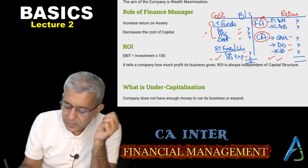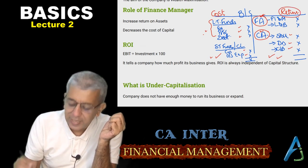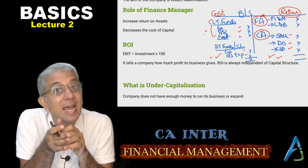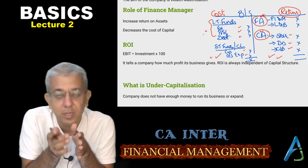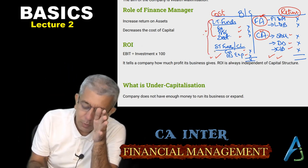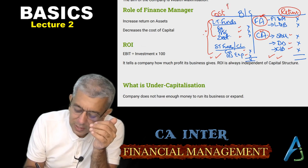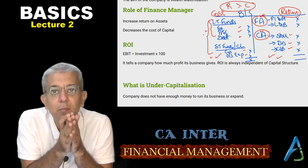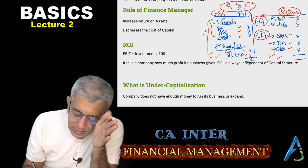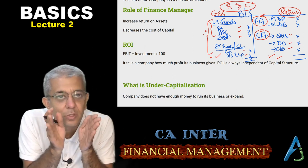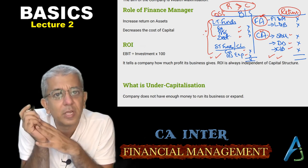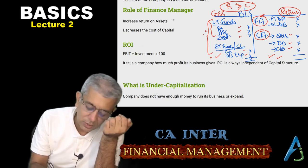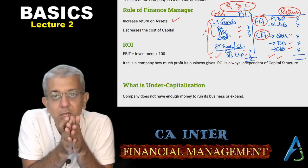The equation is: on the asset side you use money to purchase assets, assets give you return, but for that you deploy funds which entail cost. As long as returns are higher than cost, the company will do well. The moment returns become less than cost, the company will start going down.